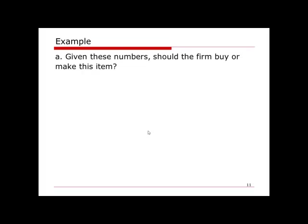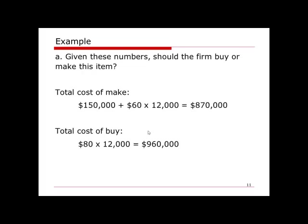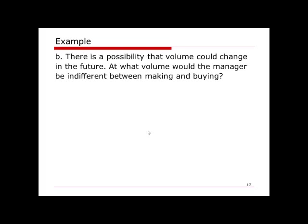To make it: fixed cost of one hundred fifty thousand plus sixty dollars times twelve thousand units gives a total cost of eight hundred seventy thousand dollars. To buy it: eighty dollars per unit times twelve thousand units gives a total cost of nine hundred sixty thousand dollars. Comparing the two, making is the better choice — the total cost is ninety thousand dollars lower, generating ninety thousand dollars more profit.